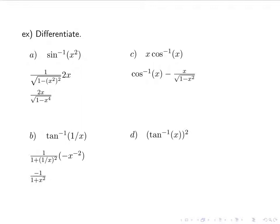Now I've got another type of chain rule: tan inverse of x being squared, so a function being squared. When I differentiate that, I'm going to first think of it as a function being squared — so I bring down the 2 and raise my function to the 1: 2 times tan inverse of x. And then I'm going to multiply by the derivative of tan inverse, which is 1 over 1 plus x squared. I'll simplify it a little bit and put everything as 2 times tan inverse of x divided by 1 plus x squared.